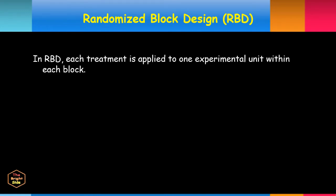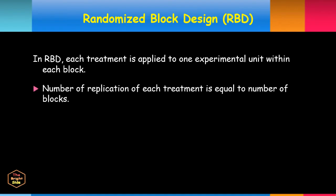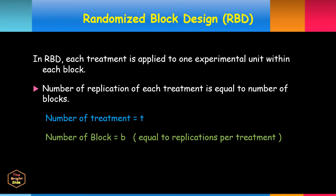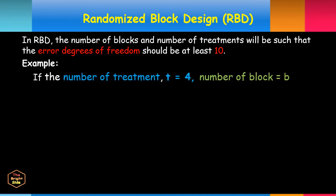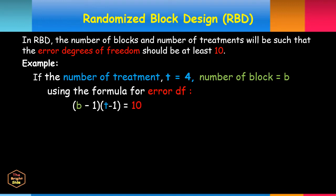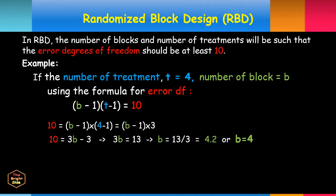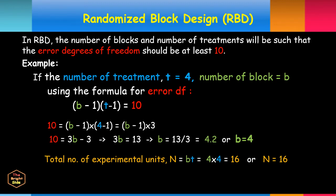In RBD, each treatment is applied to one experimental unit within each block, and the number of replications of each treatment equals the number of blocks. The number of blocks and treatments must be such that the error DF is at least 10. For example, with 4 treatments, the working equation is (B minus 1) times (T minus 1) equals 10. Substituting T equals 4 and solving for B gives B equals 4, so N equals 4 times 4 equals 16 total experimental units.